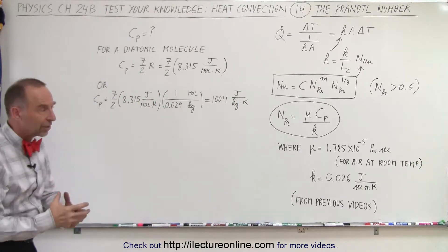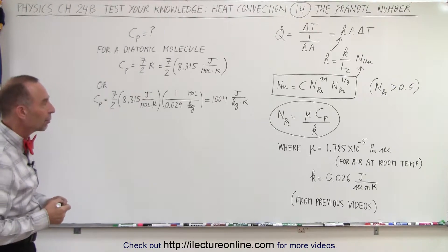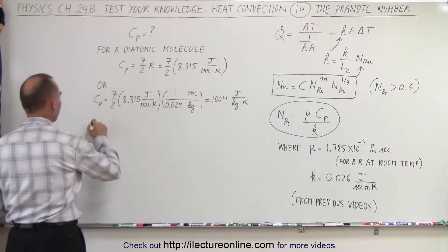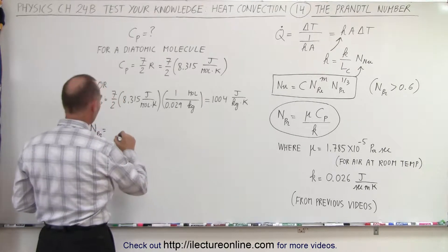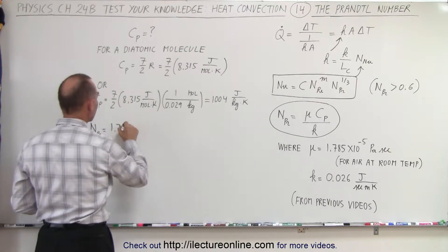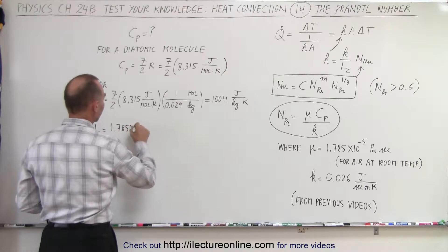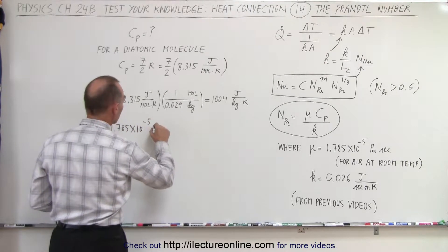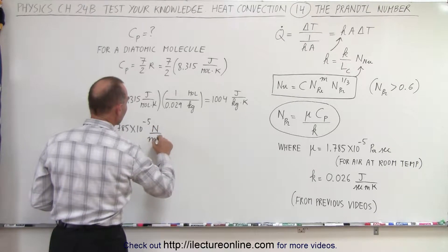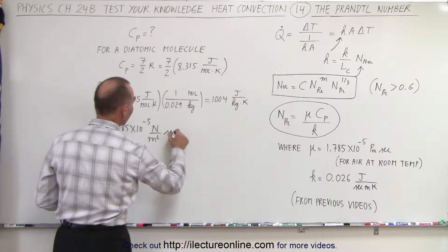And we put all that together we can calculate the Prandtl number. So the Prandtl number is equal to the viscosity which is equal to 1.785 times 10 to the minus 5 Pascals per second. That would be newtons per meter squared times seconds.